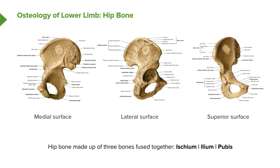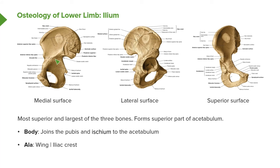The ilium is the large wing-shaped bone — it's the most superior and largest of the three bones, forming the superior part of the acetabulum. On the lateral surface, we can see it forming the superior part of the acetabulum, with a line separating the ilium above from the ischium and pubis. The body of the ilium joins to the pubis and ischium at the acetabulum.